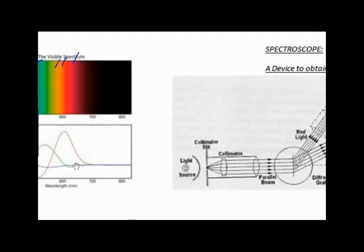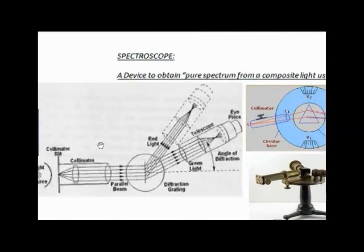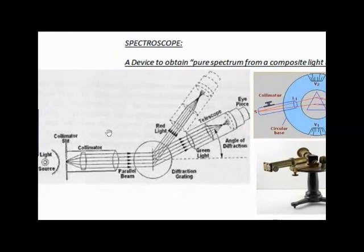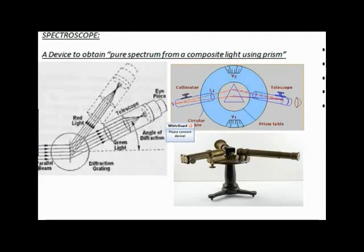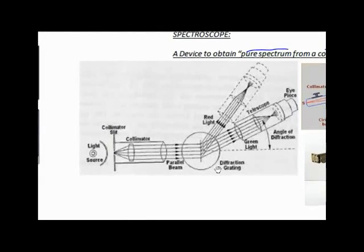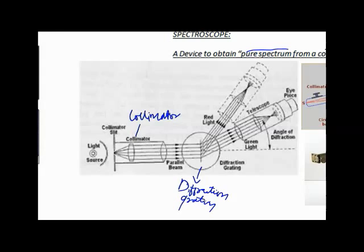A spectroscope is a device used to obtain a pure spectrum from composite light using a prism. The construction of a spectroscope consists of a collimator, a prism or diffraction grating, and a telescope.